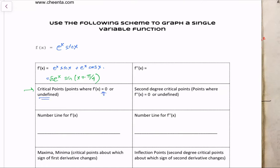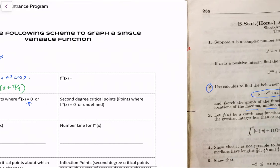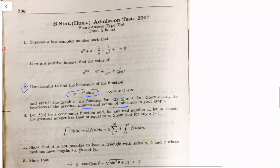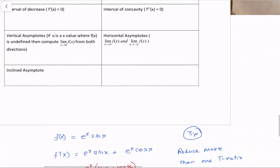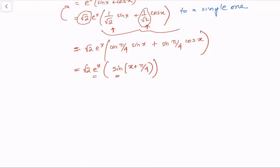So we only need to find when the first derivative is zero. Note that we're interested only in the interval from negative 2π to positive 2π — not the entire real line. Let's set root 2 times e to the x times sine(x + π/4) equal to zero. Clearly root 2 is not zero, and e to the x is never zero, so we only need sine(x + π/4) = 0.